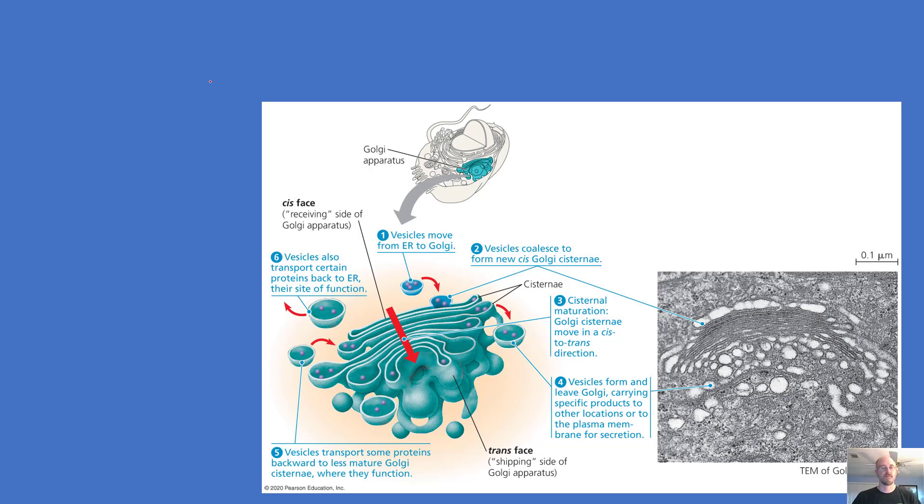All of the organelles we've been talking about so far, the endomembrane system, are composed of phospholipid membranes just like the plasma membrane of the cell. So here is a Golgi apparatus. It consists of a bunch of somewhat flattened sacs kind of stuck together like this, each one made of membrane.